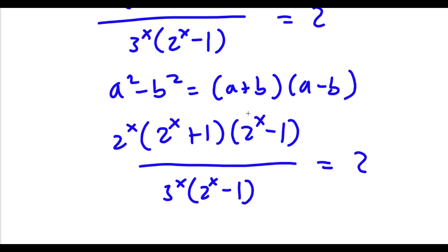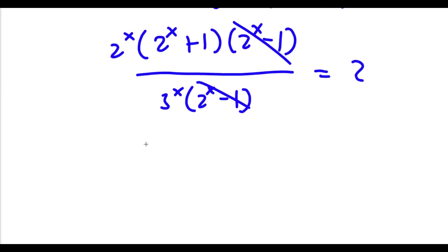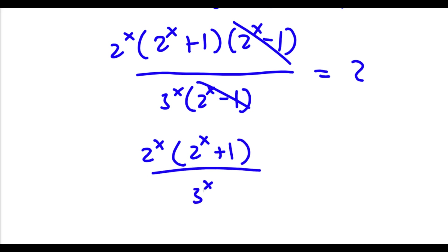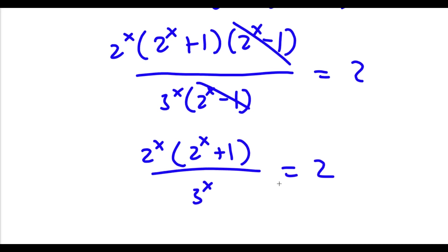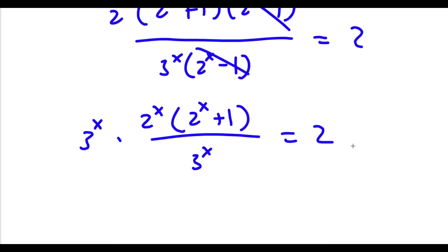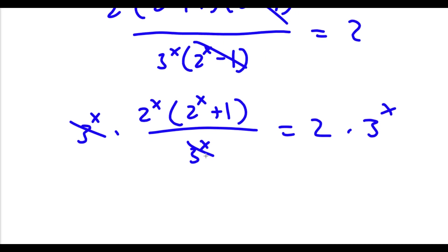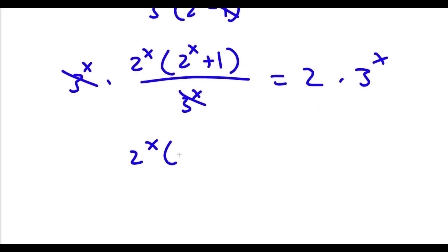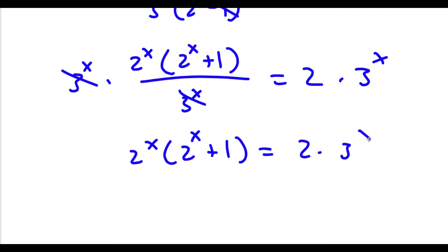So now these two can simply cancel out. I'll be left with 2 to the power of x times 2 to the power of x plus 1 divided by 3 to the power of x is equal to 2. Now if I multiply both sides by 3 to the power of x, these two will cancel out, and I'll be left with 2 to the power of x times 2 to the power of x plus 1 is equal to 2 times 3 to the power of x.